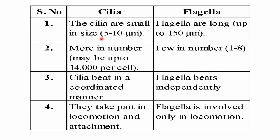There are differences between cilia and flagella. Cilia are small, measuring 5 to 10 microns, while flagella are long — up to 150 microns. Cilia are more numerous, up to 14,000 per cell, while flagella are few, ranging from 1 to 8. Cilia beat in a coordinated manner while flagella beat independently. Cilia take part mainly in locomotion and attachment, while flagella are involved only in locomotion.